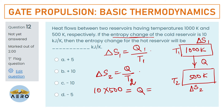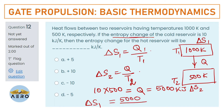To find ΔS₁ (the change in entropy of the hot reservoir): using the same Q = 5000 kJ and T₁ = 1000 K, we get ΔS₁ = 5000/1000 = 5 kJ/K.